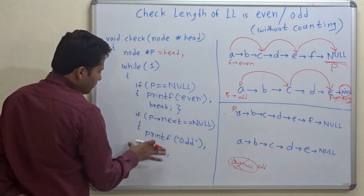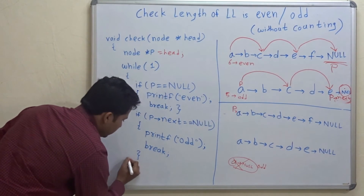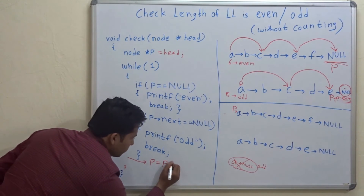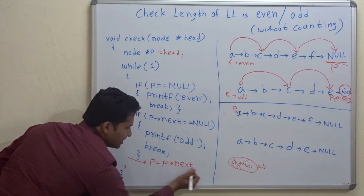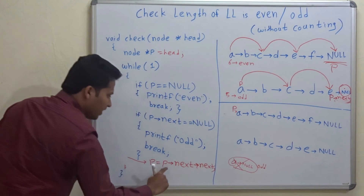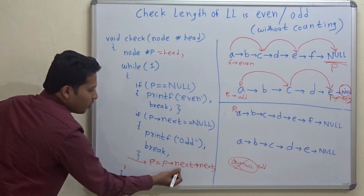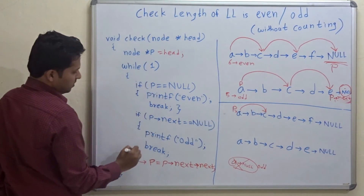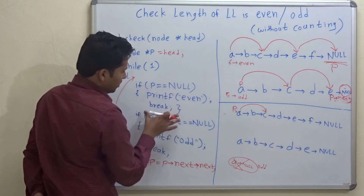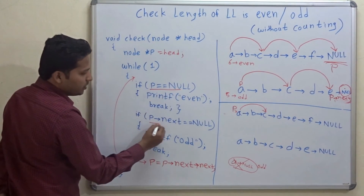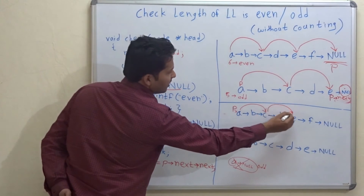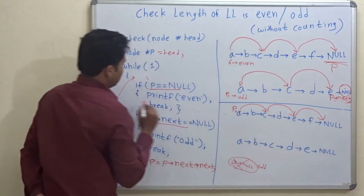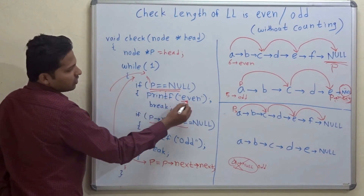Along with this, we have to do one important thing: P will go ahead by two steps. So P equals P->next->next — it will go ahead by two steps. So let's execute the code. P will go to C in the first iteration. Then we come to the next iteration: P is not null, P->next is not null, so we go ahead by two steps. Again we check: P is not null, P->next is not null, so we go ahead by two steps. In this iteration, P is null, so we print even.